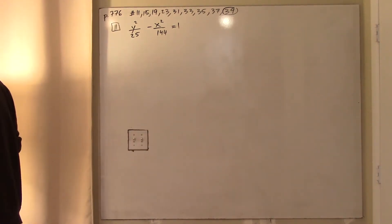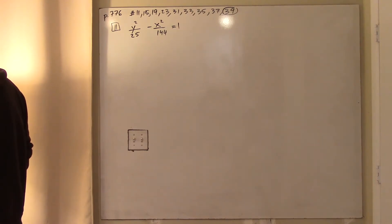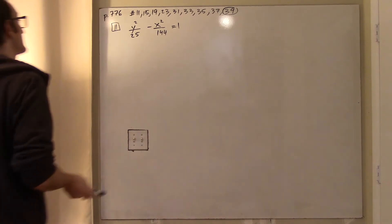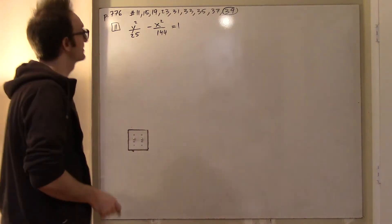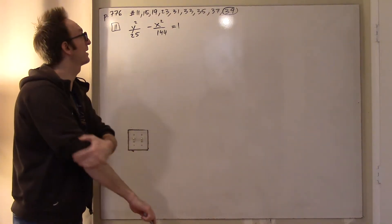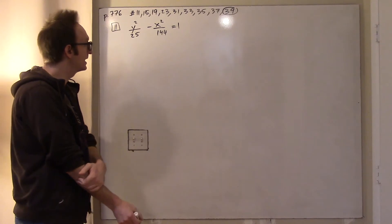Number 11 asks you to find the center, foci, vertices, and sketch using the asymptotes as an aid. This is about as simple a problem as we can possibly hope for.